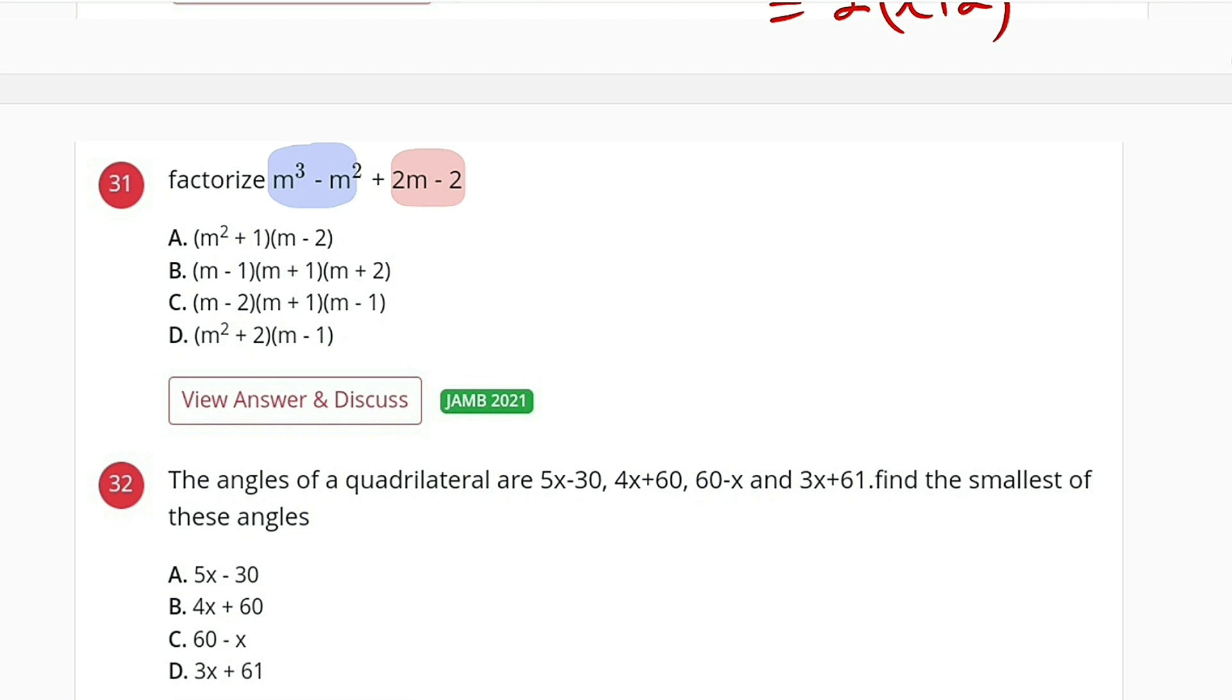The first two have m² in common, so we have m² outside. Inside we have m³ divided by m² which gives us m, minus m² divided by m² which is 1.